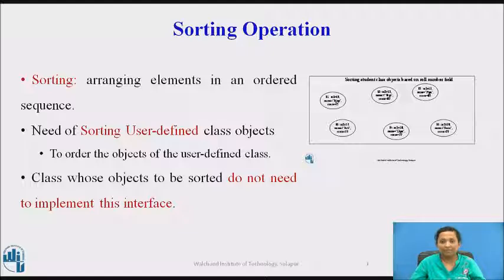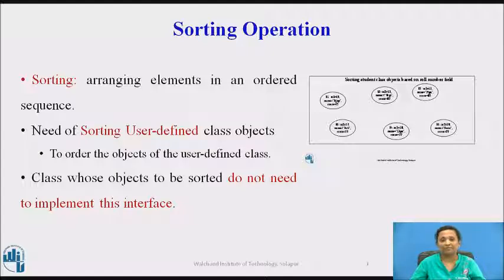Approach 2 is using Comparator interface. Comparator interface is used to order the objects of a user-defined class. This interface contains two methods: first, a compare method with two parameters, and an equals method. Here we will be discussing about the compare method. Classes whose objects are to be sorted do not need to implement this interface; a separate class needs to be defined which implements this interface. Using Comparator, we can sort the elements based on data members — for instance, roll number, name, age, or any other data member.